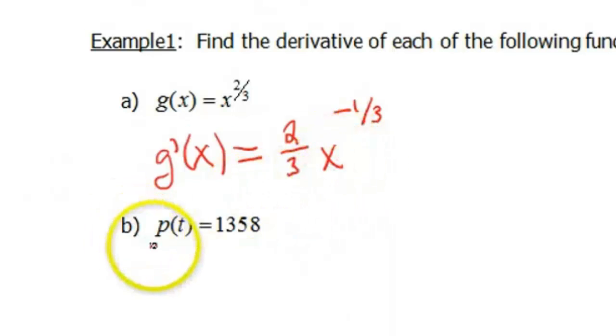Next equation is p(t) equals 1,358. So this is a constant function. I don't see a power in here though, unless you remember the fact that this is really times x to the 0 power. So when you bring that power down, that's gonna give us a derivative of 0.